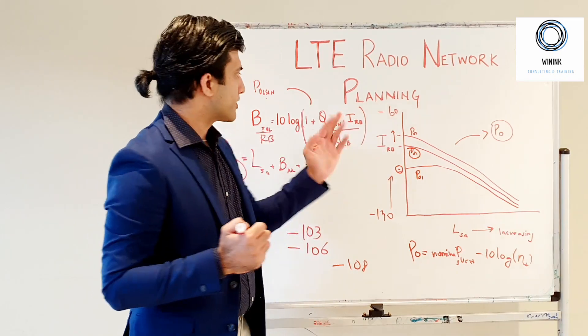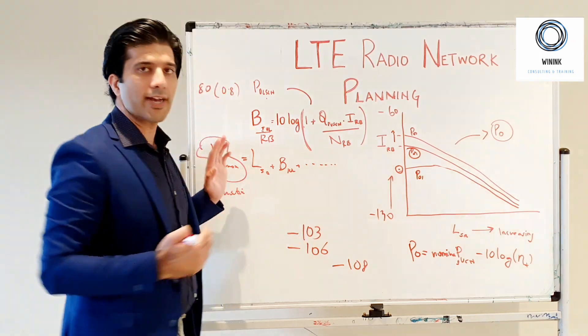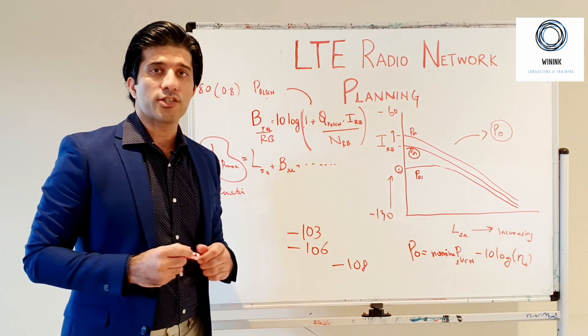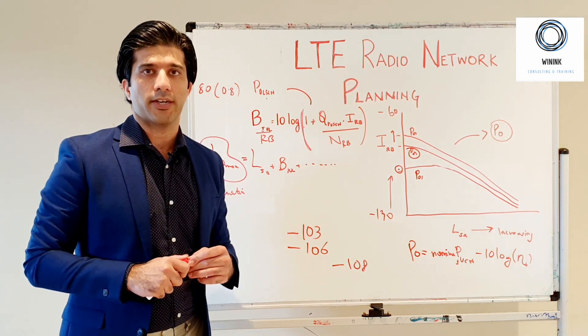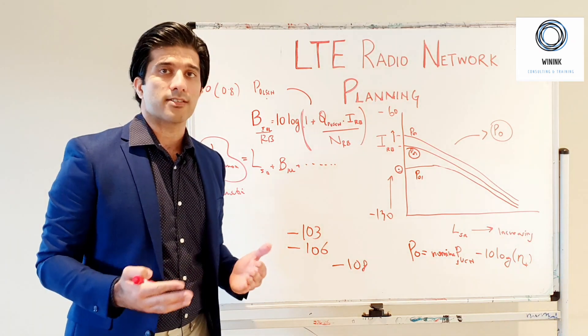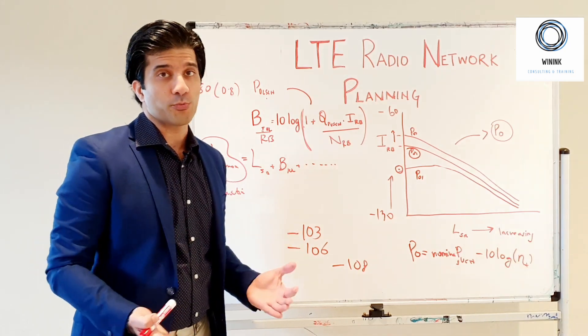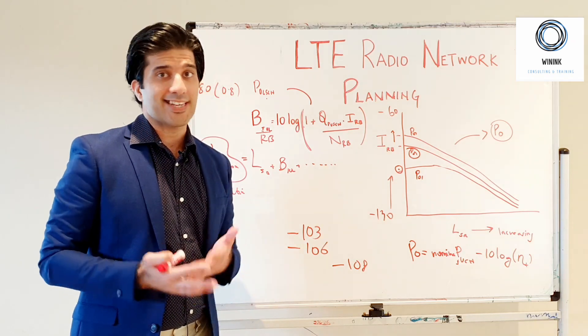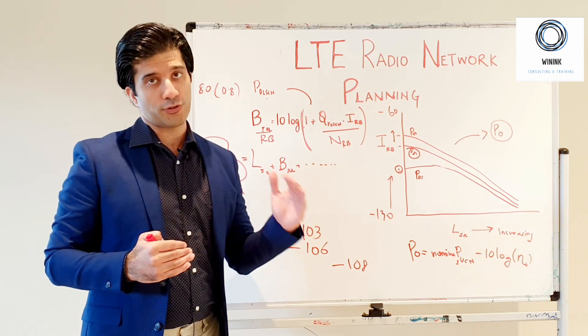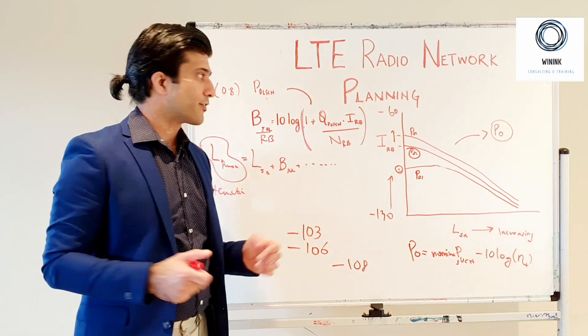Therefore, your margin for your intercell interference or your noise rise will also increase. Here you will have a question: why should we increase the power control target? The answer is that when you increase the power control target, it means that your mobile will have a better SINR and it will have a better throughput. That is the bottom line of any design - you have to draw an optimal point that you have good throughput and you have good coverage, and you use the optimal amount of resources.